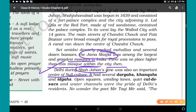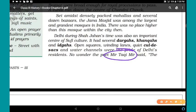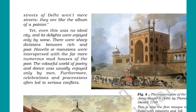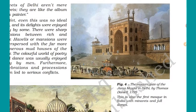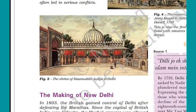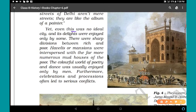Delhi during Shah Jahan's time was also an important center of Sufi culture. It had several Dargahs, Khankahs, and Idgahs. Open squares, winding lanes, cul-de-sacs, and water channels were the pride of Delhi's residents. The Urdu poet Mir Taki Mir wrote: 'The streets of Delhi aren't mere streets — they are like the album of a painter.' These streets were depicted in Figure 4, the eastern gate of Jama Masjid in Delhi, by Thomas Daniell, 1795, and Figure 5 shows the shrine of Nizamuddin Aulia.